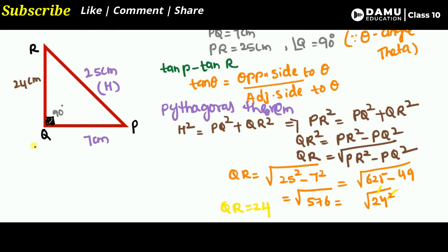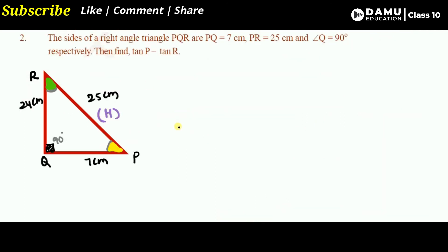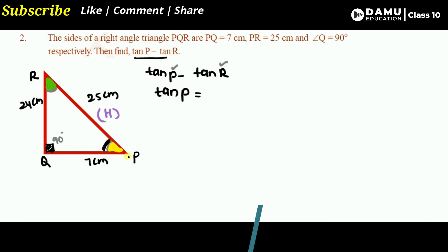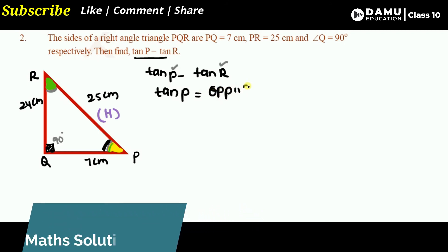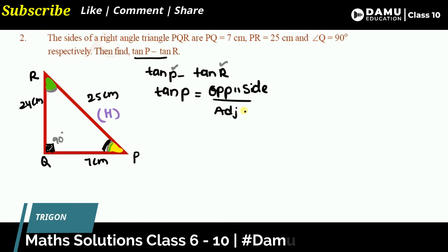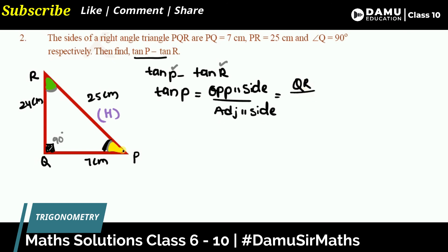Now let's calculate tan P and tan R. For tan P, using opposite side divided by adjacent side: the opposite side to angle P is QR, and the adjacent side is PQ. So tan P equals QR divided by PQ, which is 24 by 7.